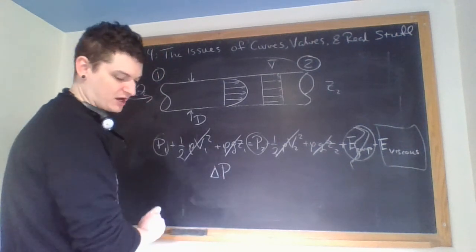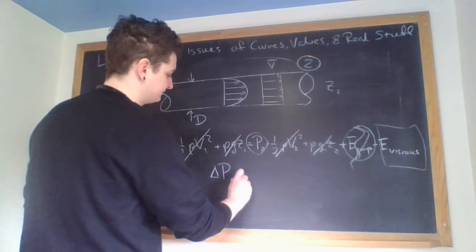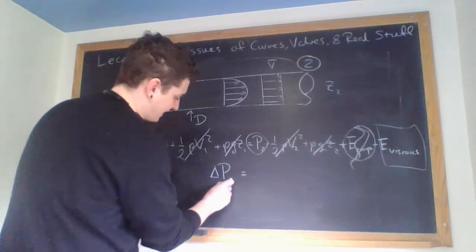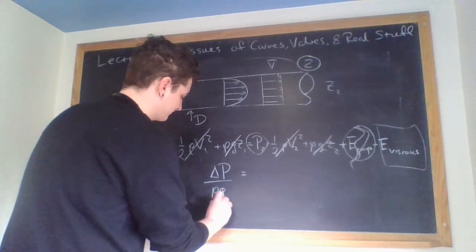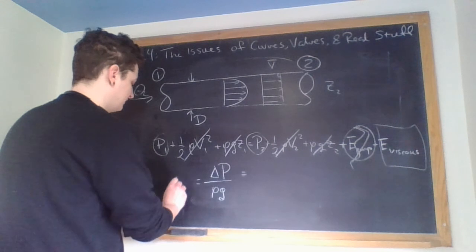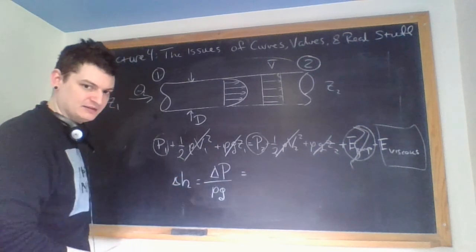My pressure drop from point 1 to point B divided by this rho G, which puts it in a unit of height.